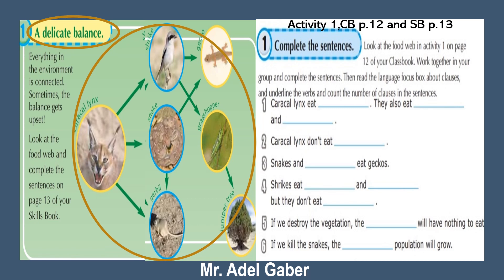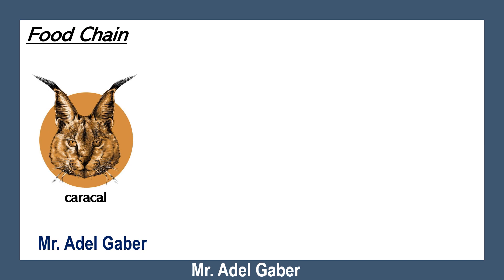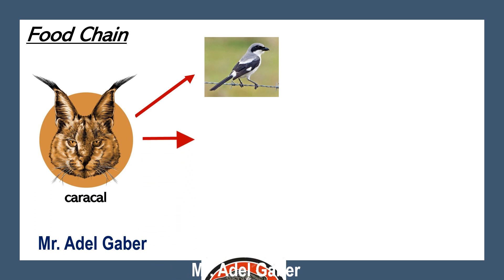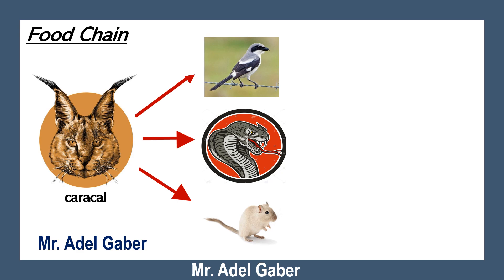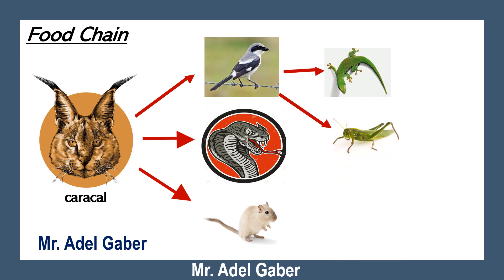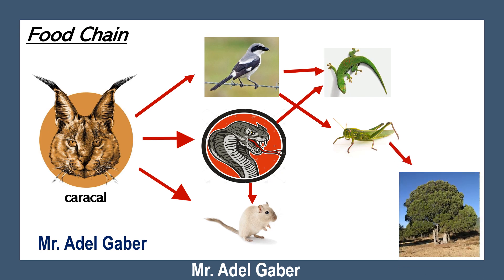The food chain shows how organisms are related to each other by the food they eat. Do you know what caracals eat? Caracals eat shrikes and snakes, and also jibbles. Shrikes eat gecko and grasshopper. Grasshoppers eat leaves and plants.